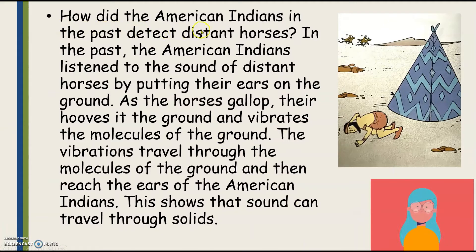How did the American Indians in the past detect distant horses? In the past, the American Indians listened to the ground for distant horses by putting their ears on the ground. As the horses gallop, their hooves beat the ground and vibrate the molecules of the ground. The vibrations travel through the molecules of the ground and then reach the ears of the American Indians. This shows that sound can travel through solids.